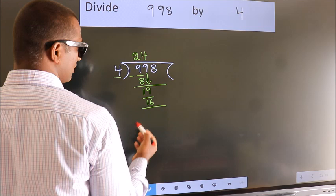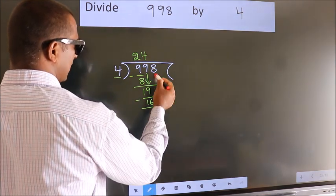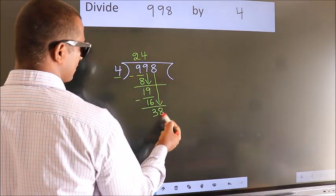Now we subtract. We get 3. After this, bring down the beside number. So 8 down. So 38.